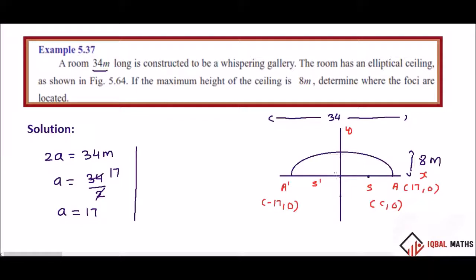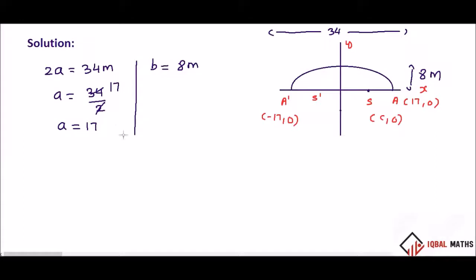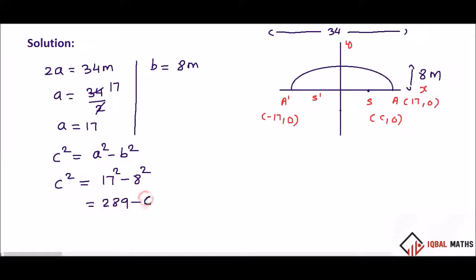The height is equal to b, and since this is semi-elliptical, b is equal to 8 meters. Now we calculate c² = a² - b² = 17² - 8² = 289 - 64 = 225.